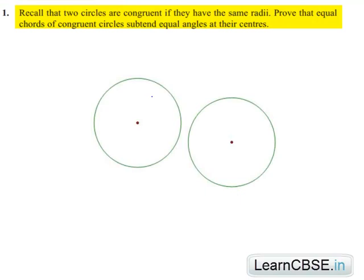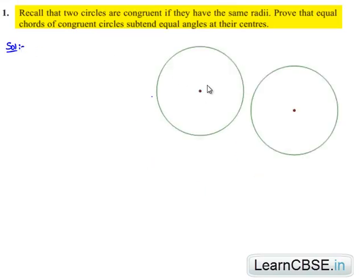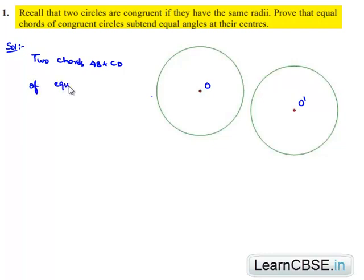Now moving on to the solution. Let us consider two congruent circles as shown in the figure. Let the center of one circle be O and the other be O'. We know that the radii of the two circles will be equal. Let us consider two chords AB and CD of equal length in the two circles.